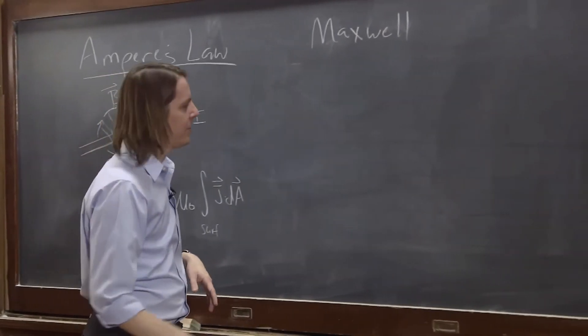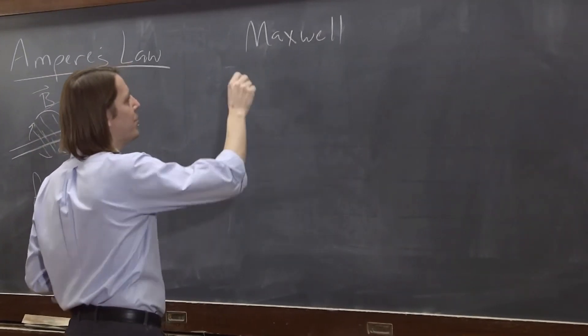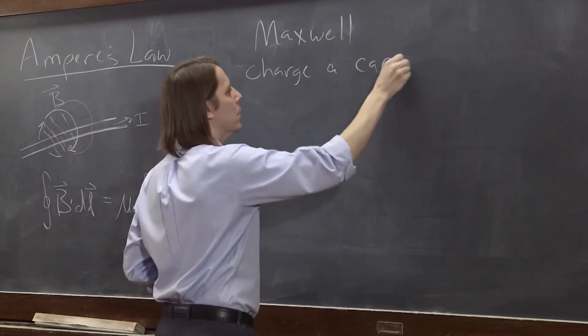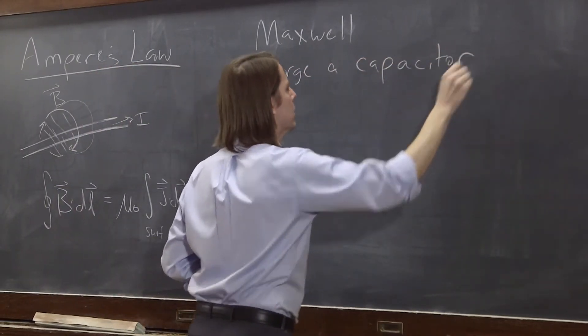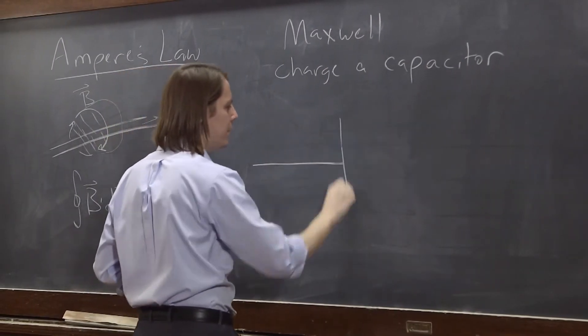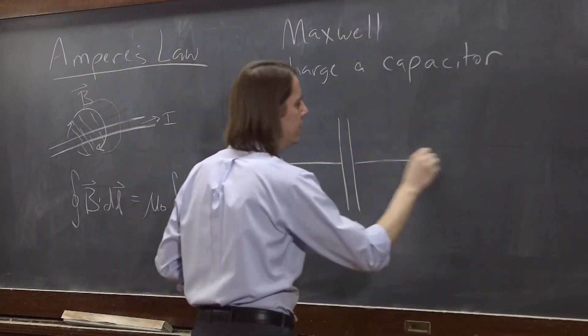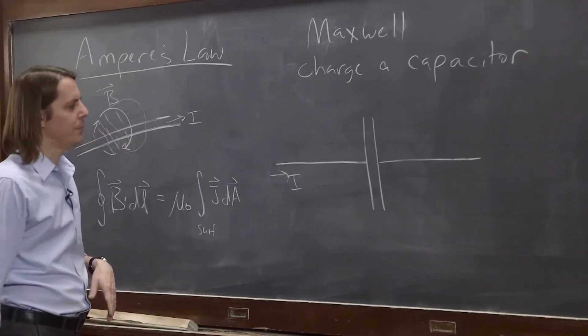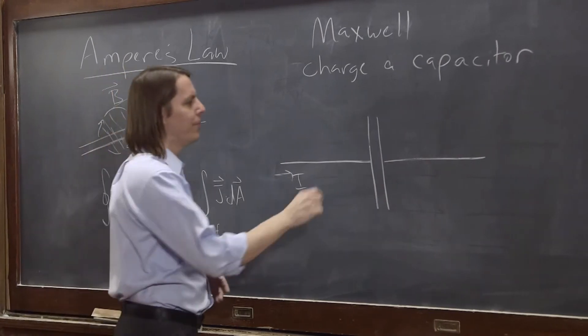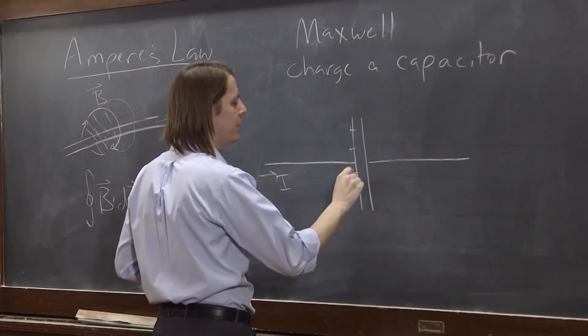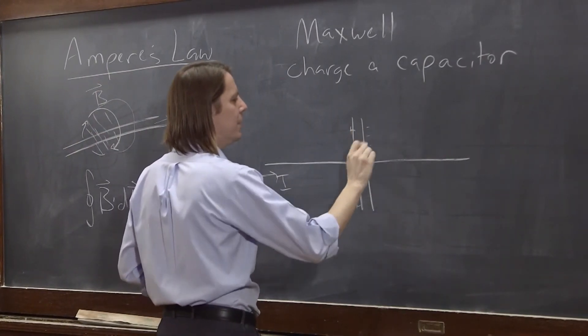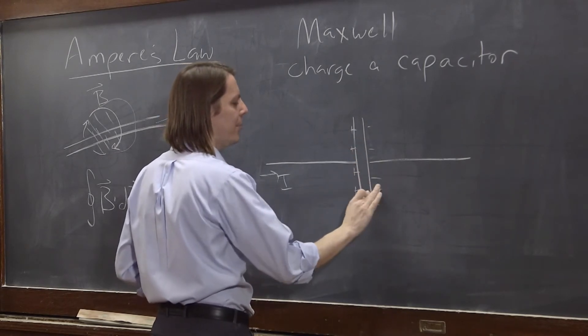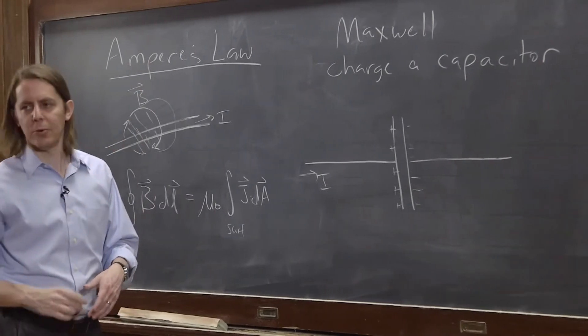And that led Maxwell to think about something like this. What if you're charging a capacitor? Okay, so here we have a capacitor connected to a couple of wires, and we send some current in like that. Well, you know what's going to happen. Current's going to flow for a while. You're going to get some positive charge. It's going to build up on this plate. Some negative, well, the same amount of negative charge will build up on that plate. And that's a story.